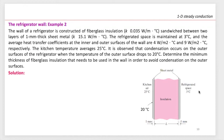The refrigerated space is maintained at 3°C, as you can see in the image. The average heat transfer coefficients at the inner and outer surfaces of the wall are 4 W/m²·°C and 9 W/m²·°C respectively. The kitchen air averages 25°C. It is observed that condensation occurs on the outer surfaces of the refrigerator when the temperature of the outer surface drops to 20°C. Determine the minimum thickness of fiberglass insulation needed to avoid condensation on the outer surfaces.